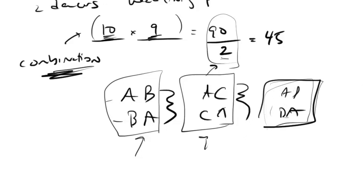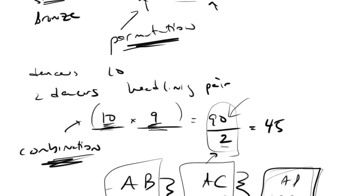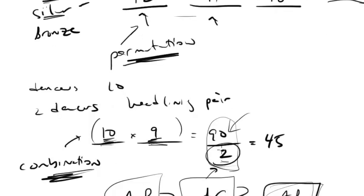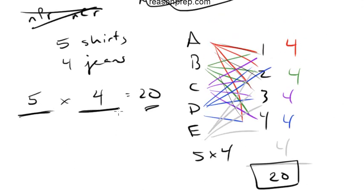You don't really need to know permutations and combinations in depth — you won't see many combination questions, and almost never ones where you divide by anything other than 2. All you really need to know is the line rule: draw lines for each choice you have to make, put in the number of choices on each line, multiply them, and that's your number of arrangements — the number of ways.